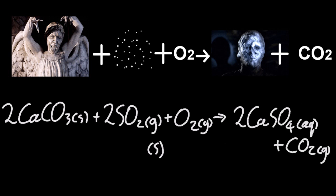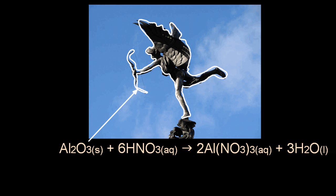This is Eros, the first ever statue made of aluminum, and it's protected by a very thin layer of aluminum oxide—naturally occurring. Now when acid rain lands on it, for example nitric acid, the oxide layer dissolves and makes little holes in it.